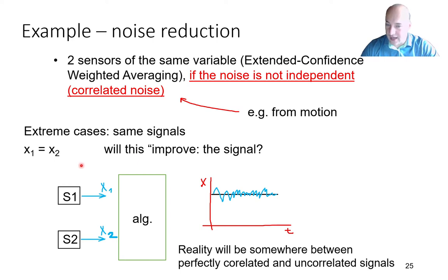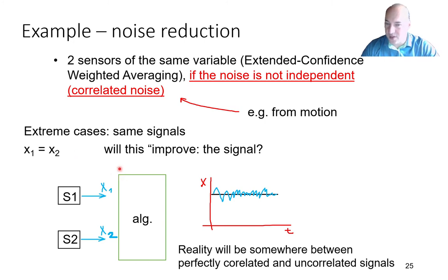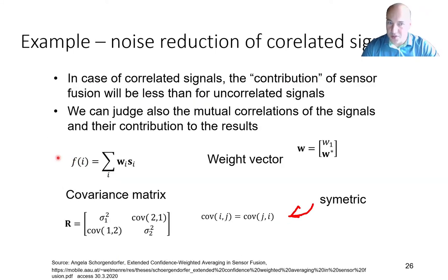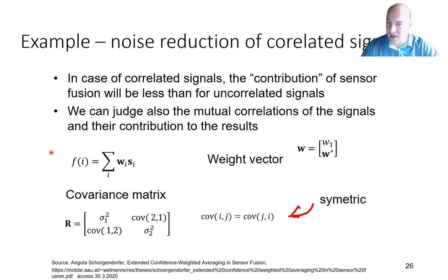In reality it will be somewhere between this extreme case — where I have the same signals — and the case we discussed last week where the noise was not correlated. So the improvement of the algorithm will be somewhere in between. In fact, when the signals are correlated, I will get less information because the signals are dependent.